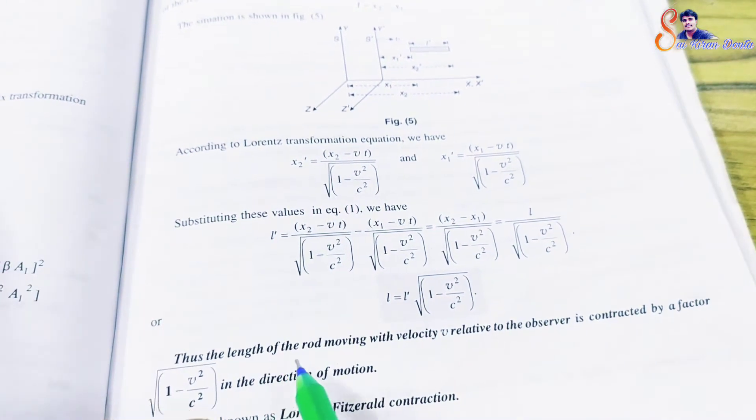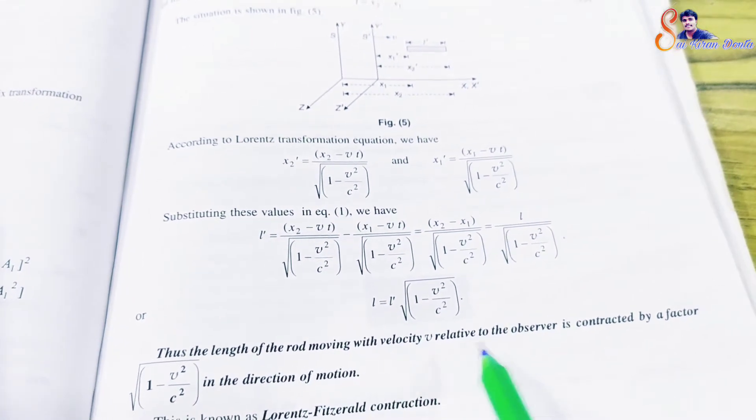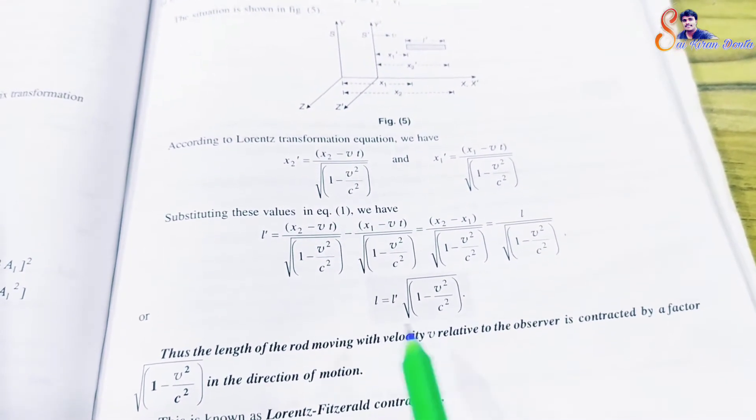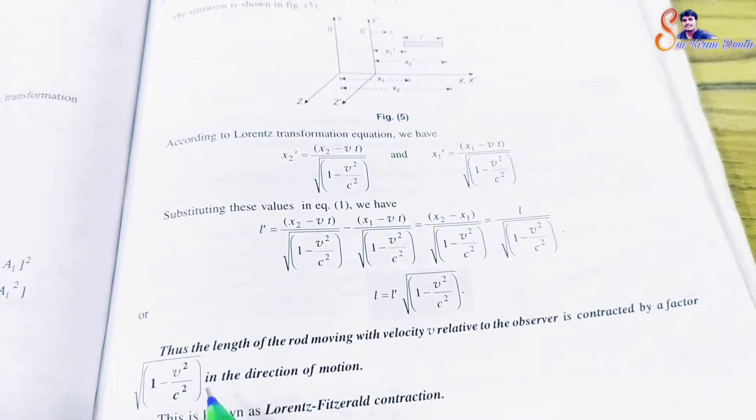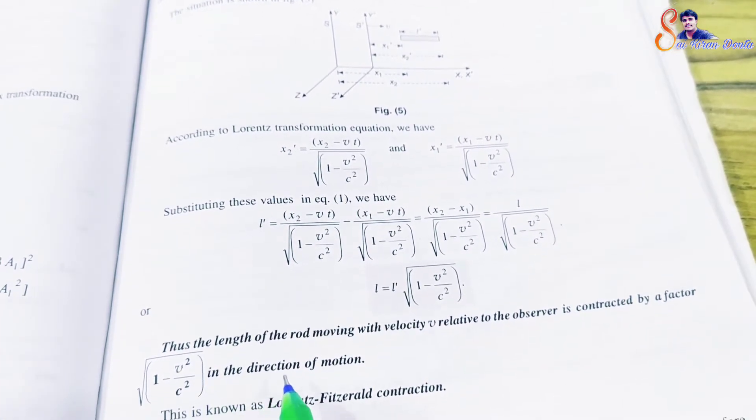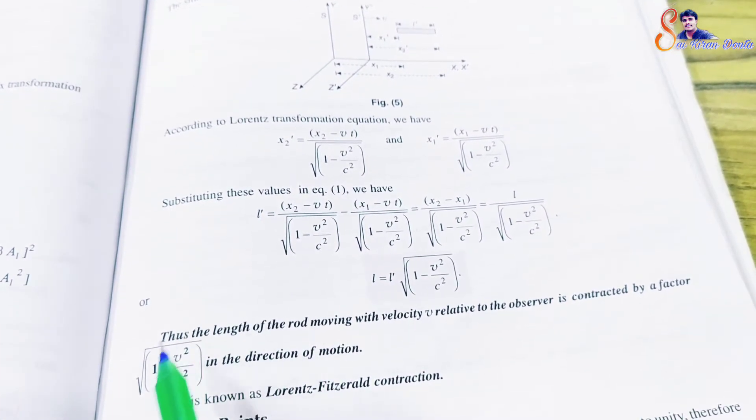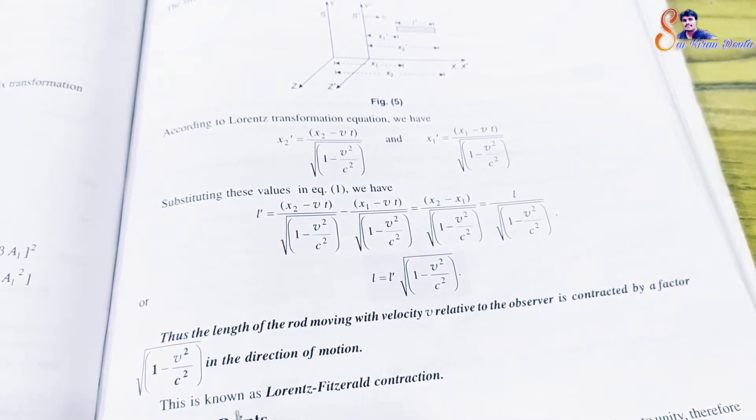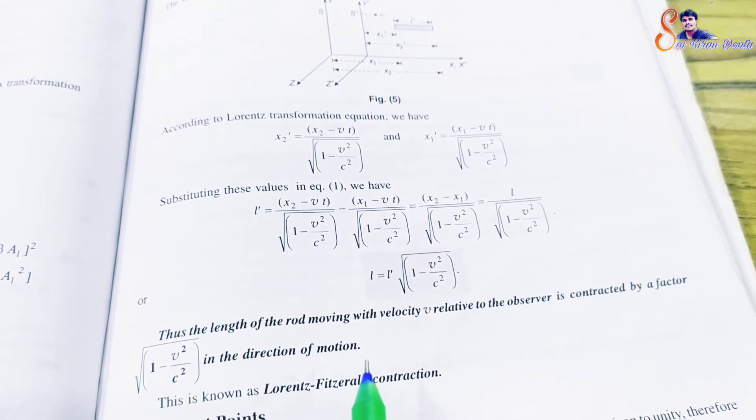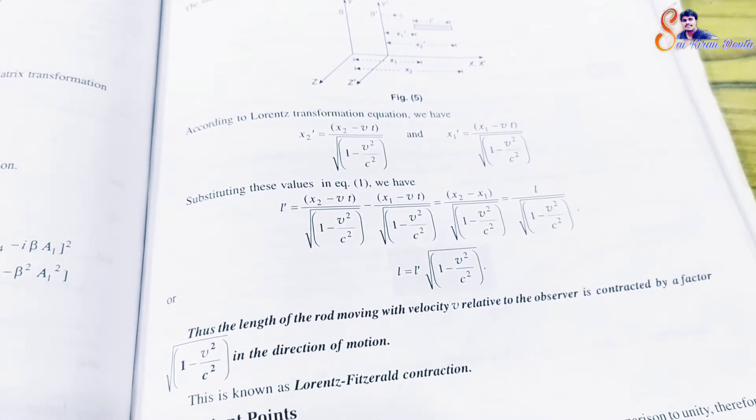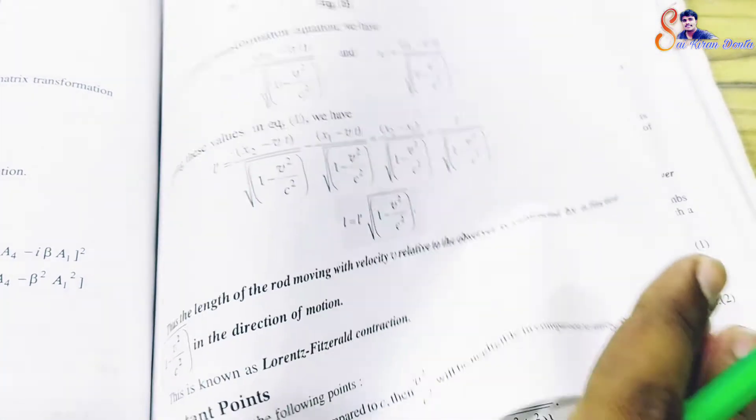Thus, the length of the rod moving with velocity v relative to the observer is contracted by a factor of square root of 1 minus v squared by c squared in the direction of motion. This is also known as Lorentz-FitzGerald contraction.